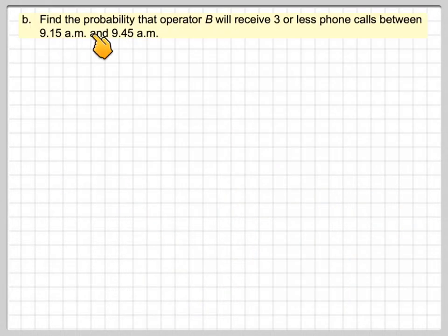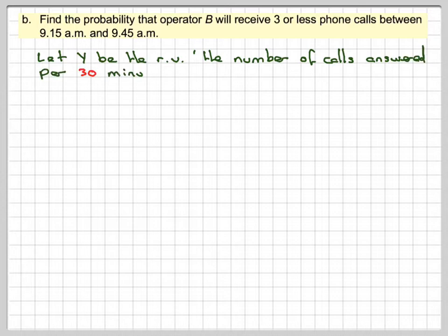Part B: Find the probability that operator B will receive 3 or less phone calls between 9:15 and 9:45. Let Y be the random variable of the number of calls answered per 30 minutes by operator B.